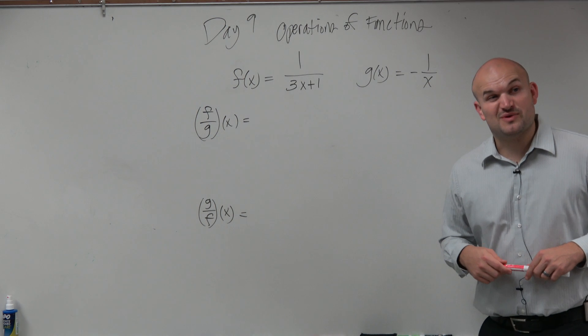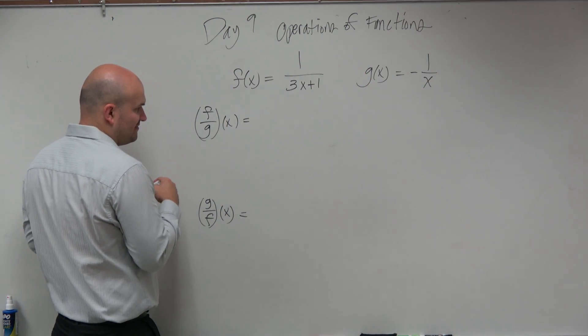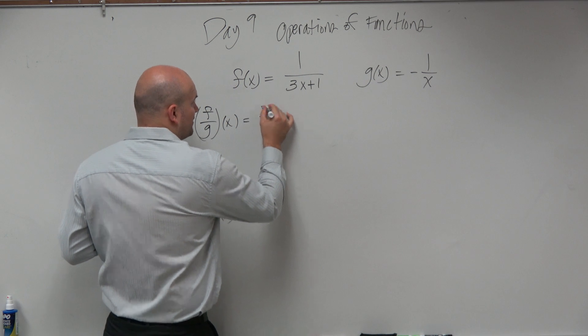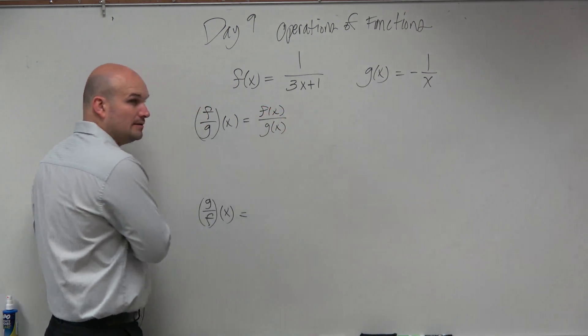So in these two examples, we have to go ahead and divide. So again, if you have something like this, f divided by g of x, that's basically just saying what is f of x divided by g of x?